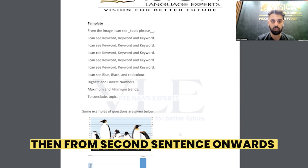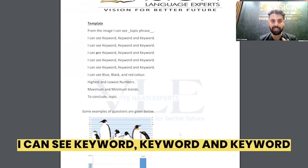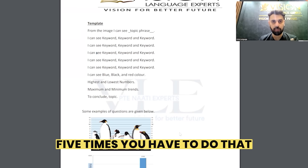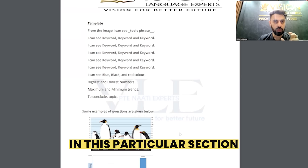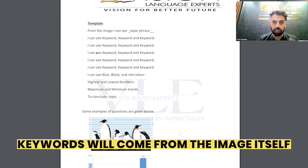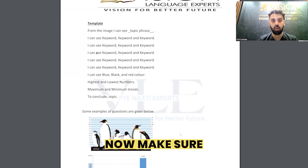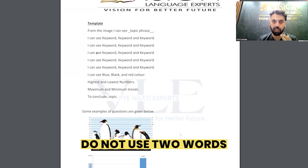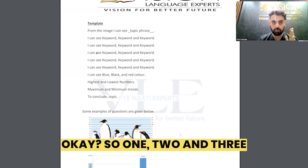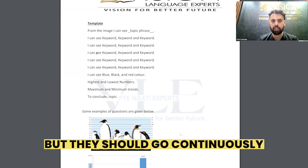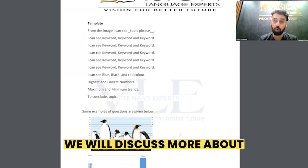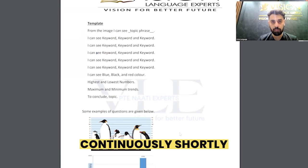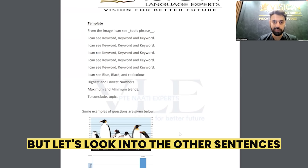From the second sentence onwards, you repeat: 'I can see keyword, keyword, and keyword.' You do this five times. The keywords come from the image itself. Make sure keywords are only one word — do not use two words. They should be spoken continuously. We will discuss continuity shortly, but let's look at the other sentences now.